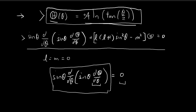This solution exists mathematically — it is definitely a solution to this differential equation. But for physics, it doesn't really help us because this is not normalizable. When θ equals 0, you get tangent of 0, and tangent of 0 is 0. As θ tends towards 0, the natural log tends towards negative infinity. This behavior would not allow us to normalize the solution.